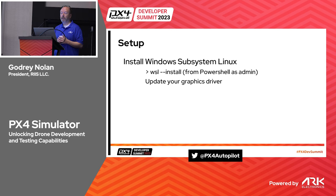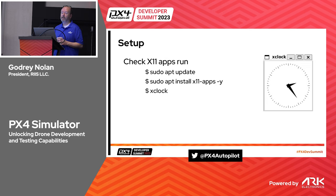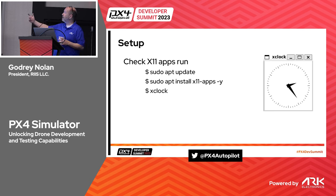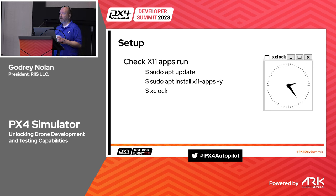For getting it running, WSL install from the command line. One thing I found that wasn't obvious is that if you're running Intel or NVIDIA, you really have to update your graphics driver, otherwise the X11 stuff doesn't start showing up. The way to know if it's going to work is to install the most basic X11 apps - do sudo apt update, then install all X11 apps, and then to make sure it's working you get this xclock. This thing has been around since the 80s, and essentially that's what we're going for.